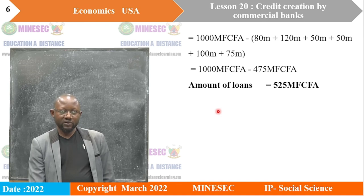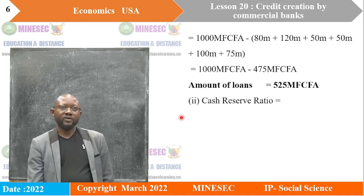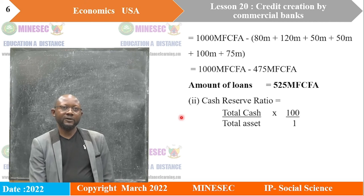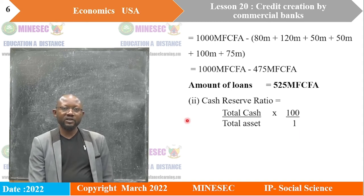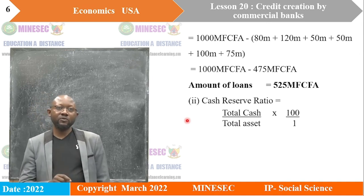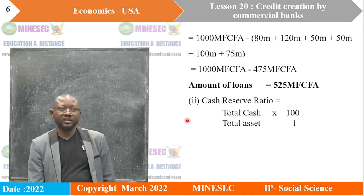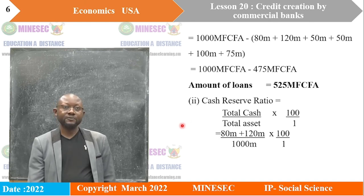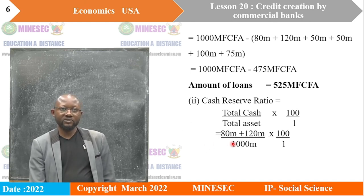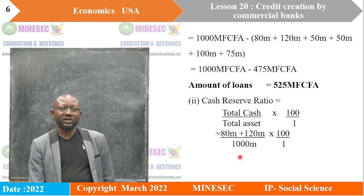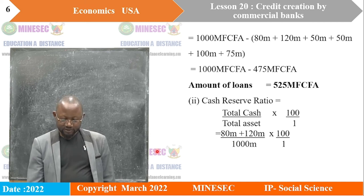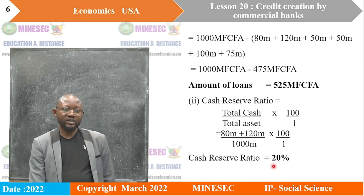The next question asks us to calculate the cash reserve ratio. The formula is: total cash divided by total assets, times 100 to get a percentage. Our total cash is not only limited to cash in the bank's coffers — it also includes operational balances at the central bank, which equally represent cash. So we take 80 million plus 120 million, divided by total assets of 1,000, times 100, giving us a cash reserve ratio of 20%.